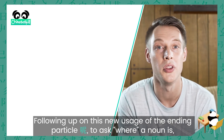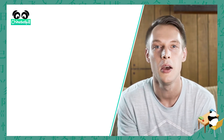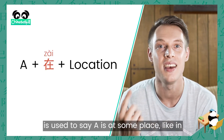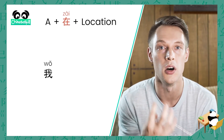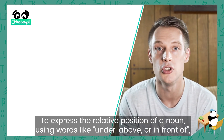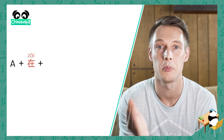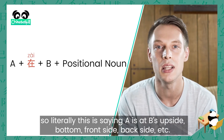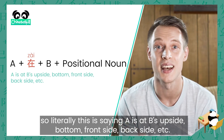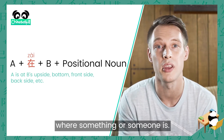Building on this new usage of 呢, let's now look at how to give a more detailed description of a noun's location or position. Before, we learned the basic structure A 在 plus a location, to say A is at some place, like 我在家, I'm at home. To express the relative position of a noun using words like under, above, or in front of, we use the structure A plus 在 plus B plus a positional noun — literally saying A is at B's upside, bottom, front side, back side, etc.